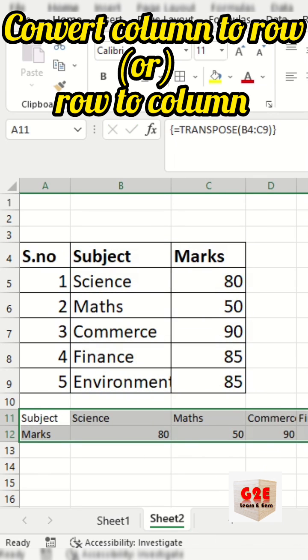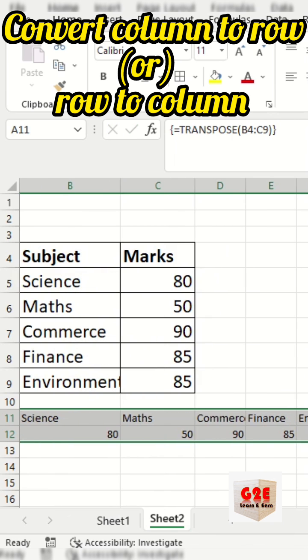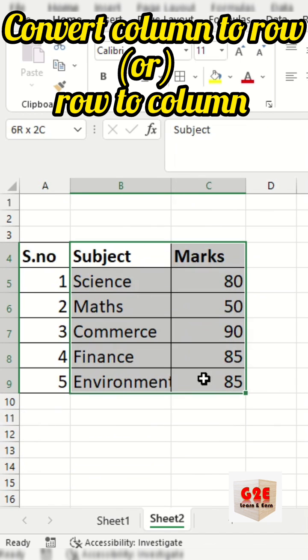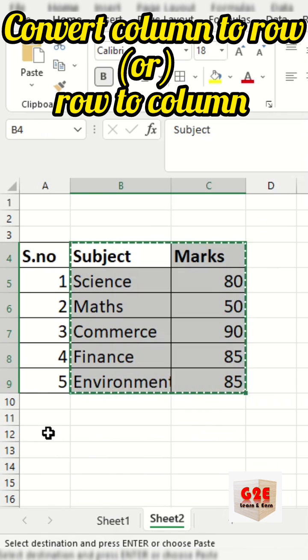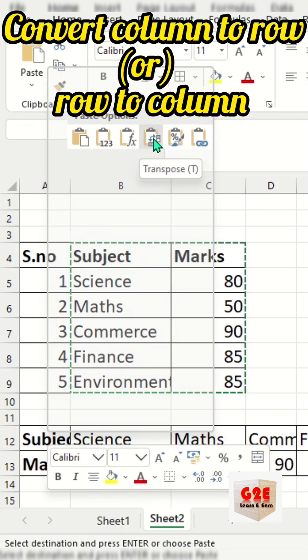For the second method, you can select the whole range and copy it. Then select the cell where you want to paste, right-click, select Paste, and choose Transpose. The transposed data will come automatically.